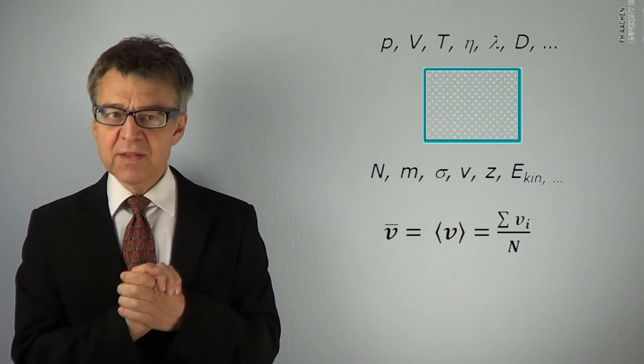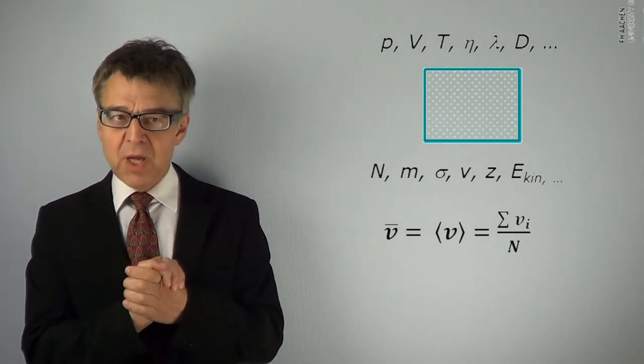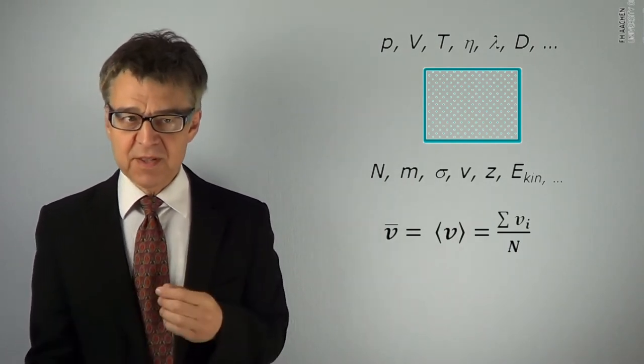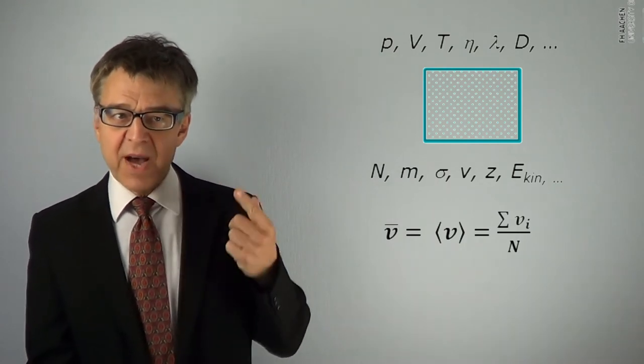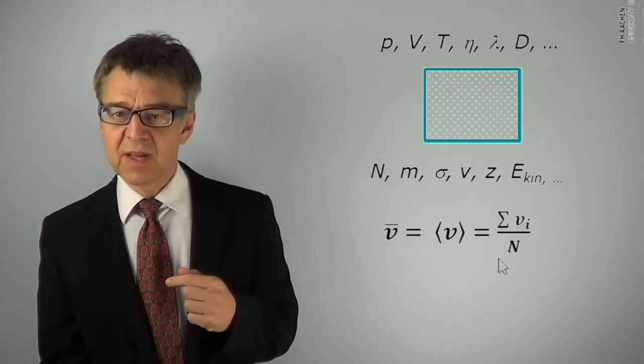Because there are very, very many particles and because their velocities and energies are constantly changing, we have to deal with mean values. Mean values are represented by a horizontal bar on the symbol or by two square brackets. So, the mean velocity v bar is the sum of all velocities of all particles divided by the number of particles, capital N.